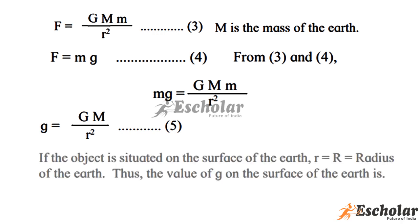If the object is situated on the surface of the earth, r equals R, that is the radius of the earth. Thus, the value of g on the surface of the earth is g equals G times mass of the earth upon R square, where R is the radius of the earth. This is Equation 6.